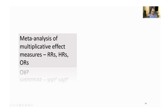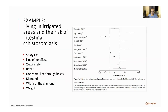We've considered what the pooled estimate is, your approach to deriving it, and how to visually represent it. We'll now consider specific examples, starting with ratio or multiplicative effect measures. I'm assuming everyone knows the definitions of relative risk, hazard ratios, and odds ratios — for relative risk and odds ratio, one means there's no effect.